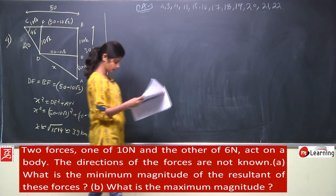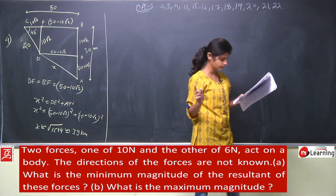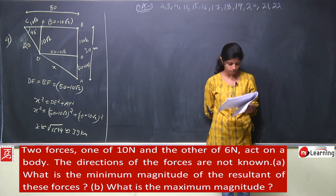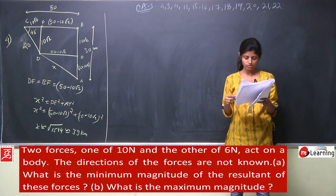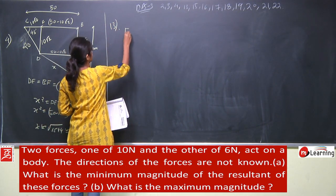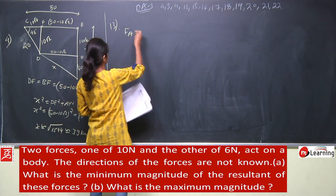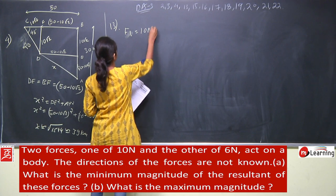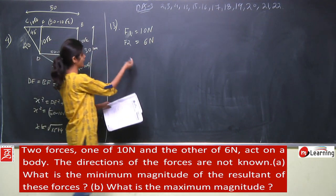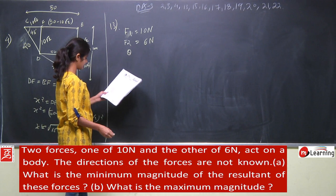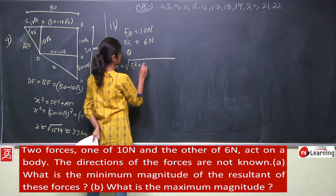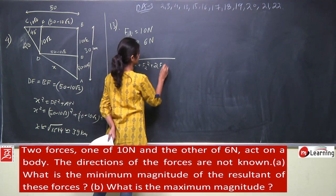Next is question number 13. Two forces, one of 10 Newton and the other of 6 Newton, act on a body. The direction of the forces are not known. So what is the minimum magnitude of the resultant force of these forces? A body has two forces acting on it with magnitudes F1 equals 10 Newton and F2 equals 6 Newton. Two vectors with angle theta between them, so the resultant will be under root of F1 squared plus F2 squared plus 2 F1 F2 cos theta.